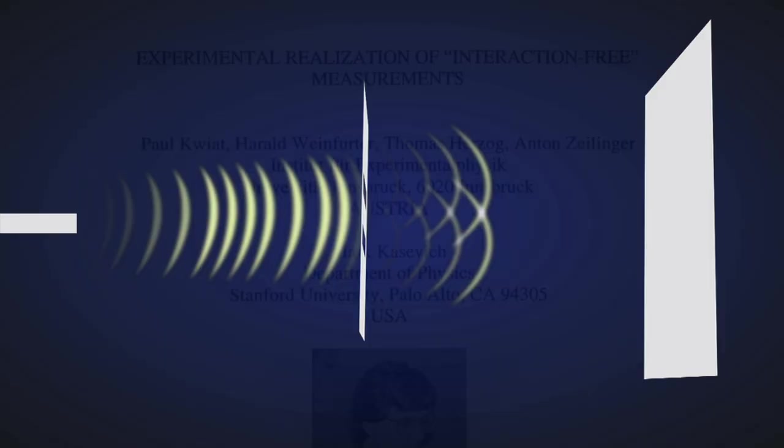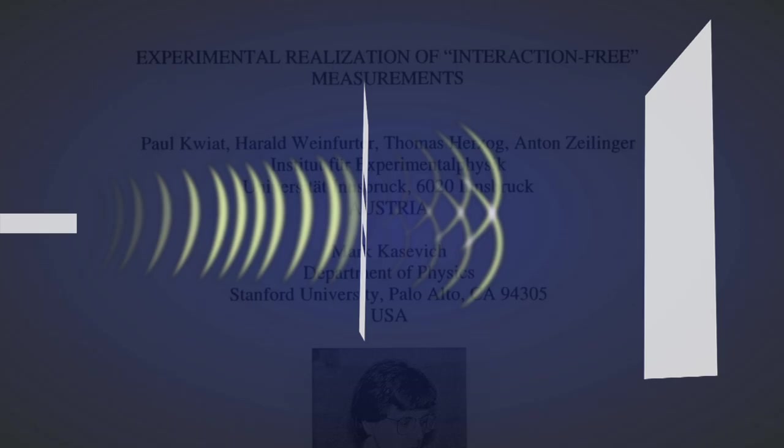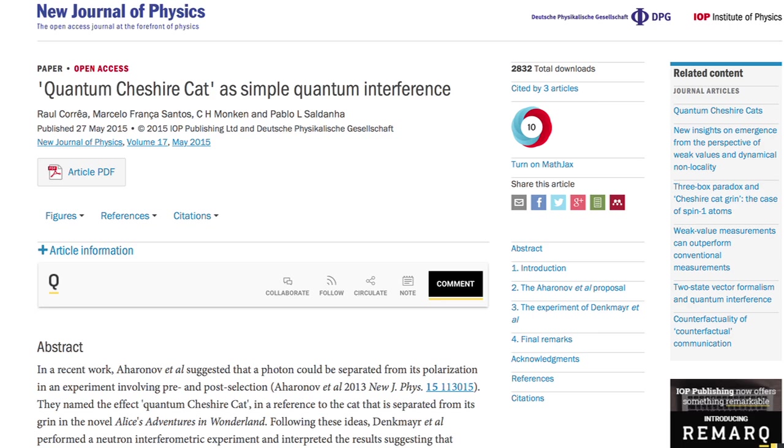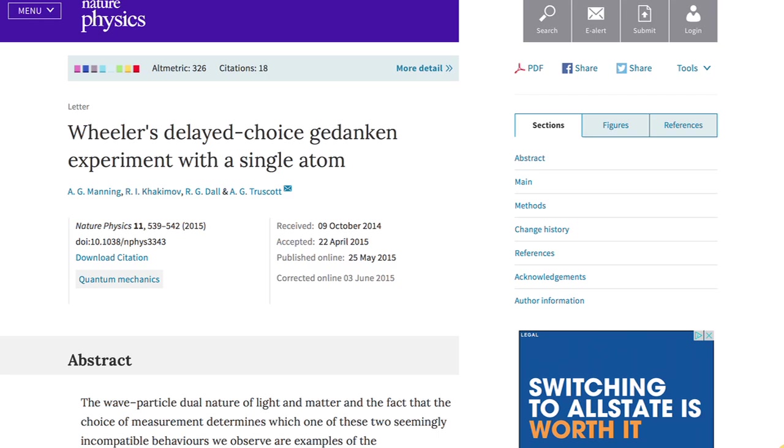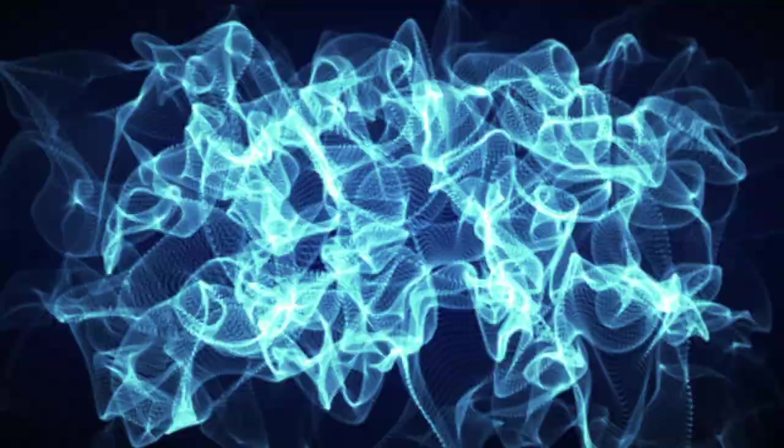Whether it is the interaction-free experiments, Cheshire Cat experiments, delayed-choice quantum eraser experiments with subatomic particles or even atoms, or even non-local delayed-choice quantum eraser experiments where the measuring devices were separated by several kilometers. All this has led to the conclusion that physical reality is dependent on there being an observer to collapse the wave function.